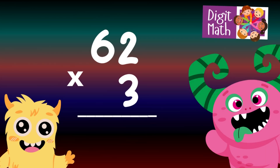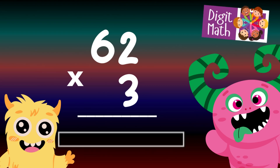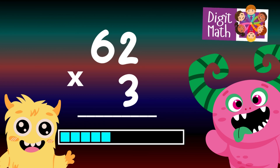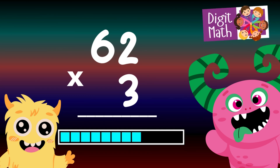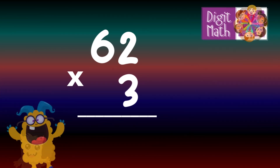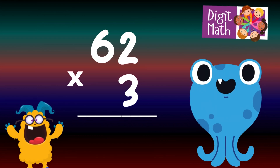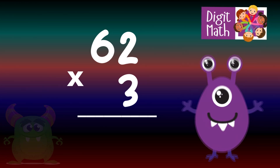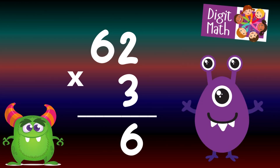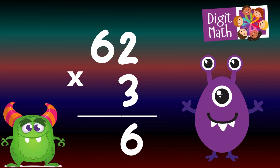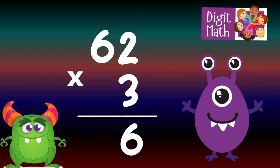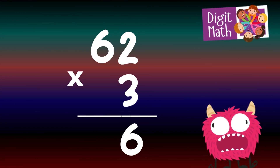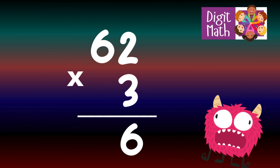48 times 8 — time to think. To solve, multiply 48 by 8. In the Units column, multiply 8 by 8, which equals 64. Place 4 in the Units column and carry over 6 to the Tens column.